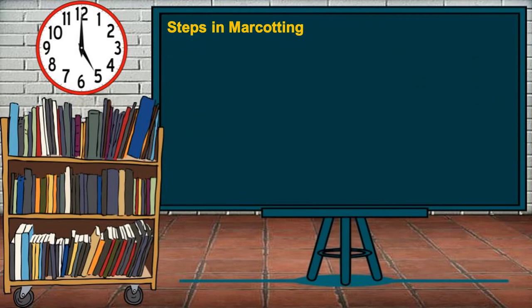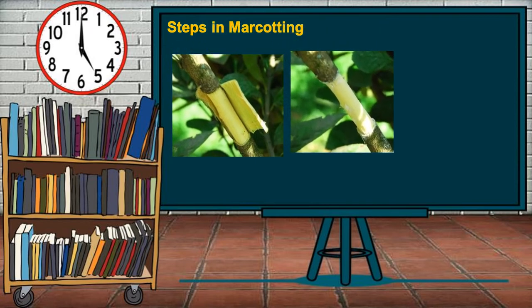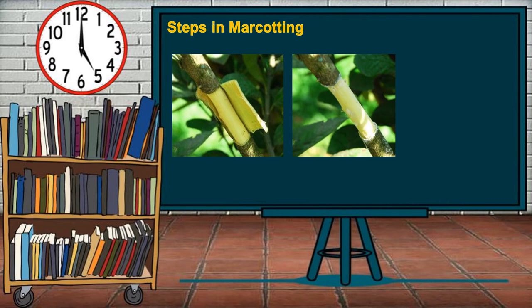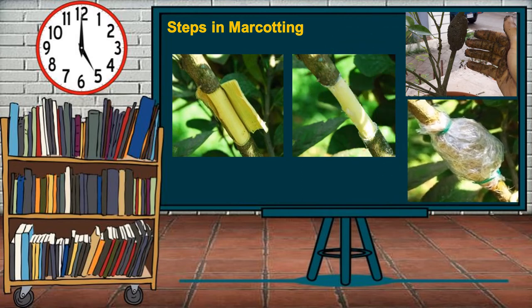Steps in marcotting. First, remove a ring-like layer around the desired branch. Step 2: after the bark is completely peeled off, scrape off the slippery lining that covers the branch. Third, place moist soil around the area where the bark has been peeled off. Step 4: after placing the rooting medium around the cut area, hold it with coconut husk or transparent plastic sheet and tie it firmly in place. Fifth, water the marcotted area for 2 to 12 weeks. And lastly, after it has developed a good root system, remove the cover, separate the branch from the mother plant, and transfer it to the garden.